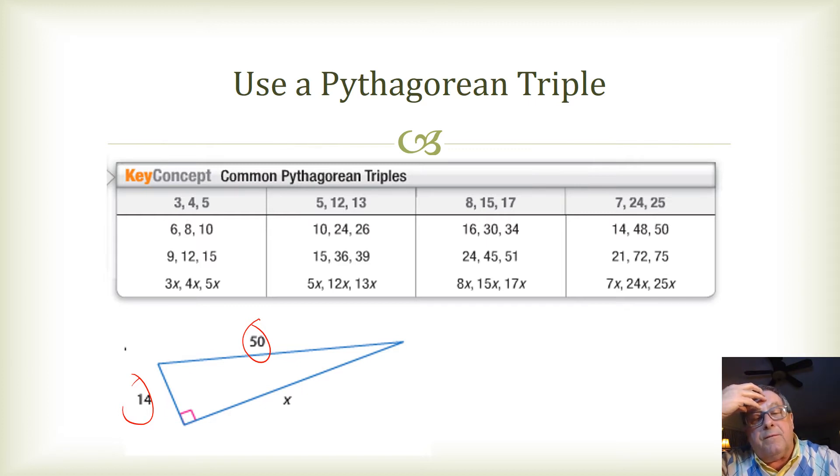Let's see. So, 50 and 14. Well, they're both divisible by 2. So, if I have 50 over 2, that equals 25. And if I've got 14 divided by 2, that equals 7.